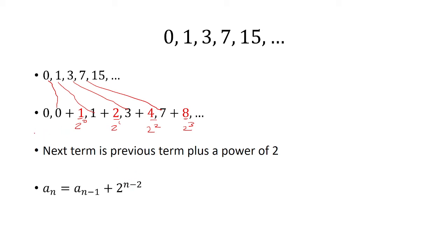Well, how do we know it's n minus 2? Let's see. The first term is n equals 1, the second term is n equals 2, the third term is n equals 3, etc. Notice the difference between n and the exponent. It's always going to be 2. So that's why I did n minus 2.